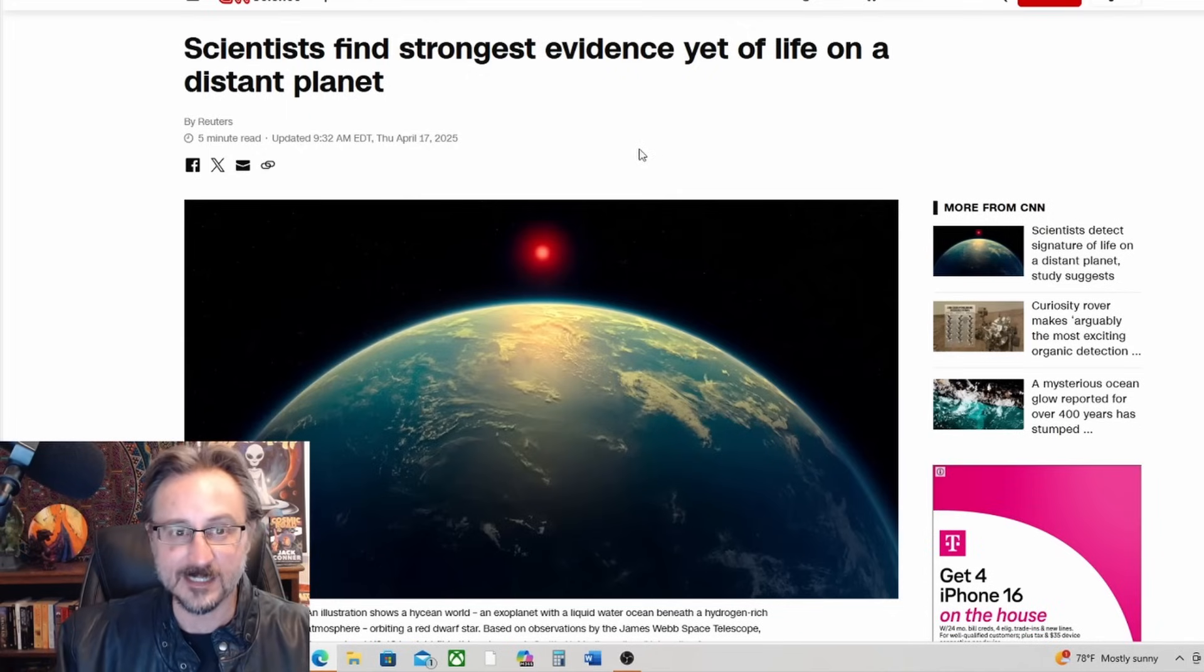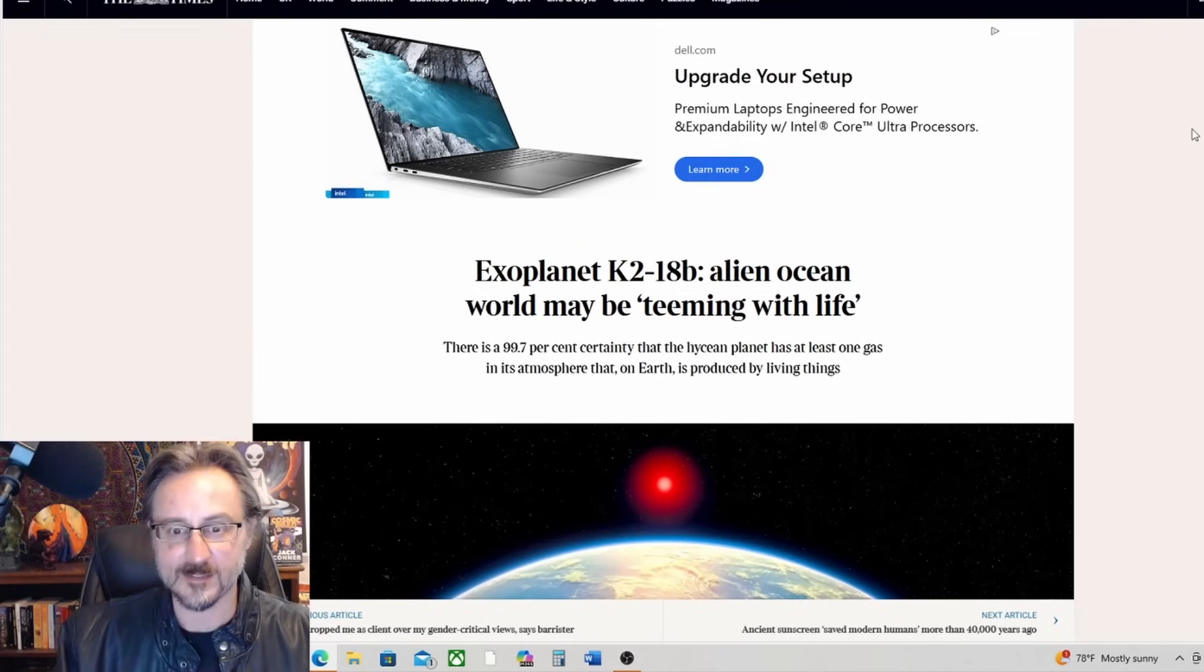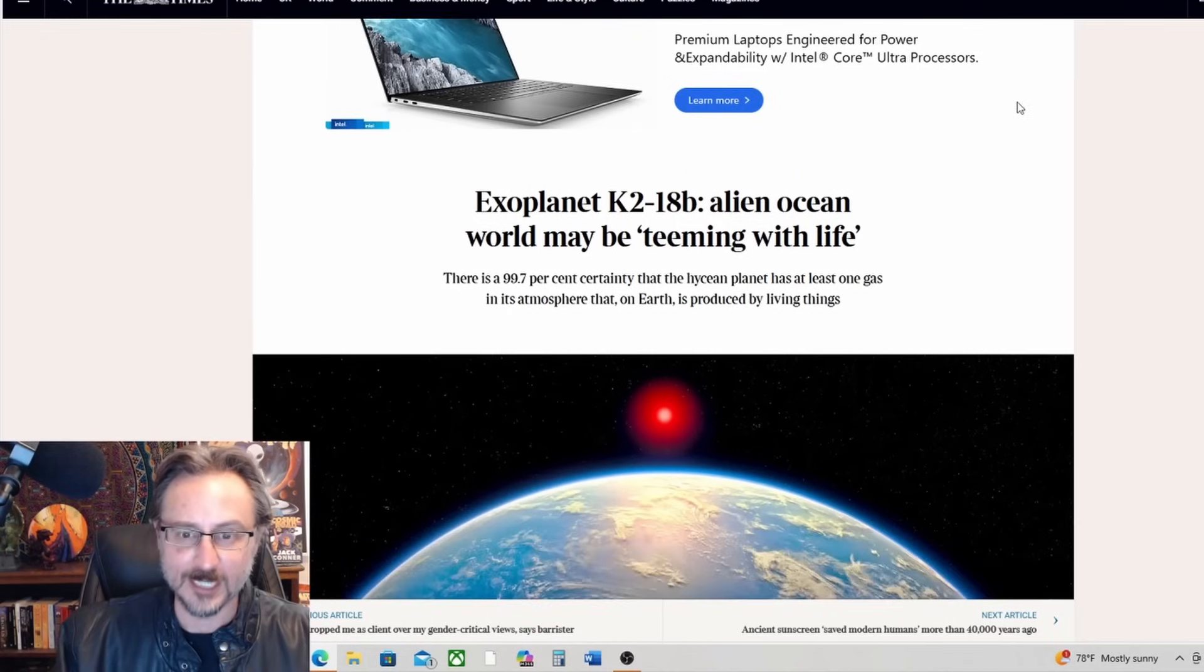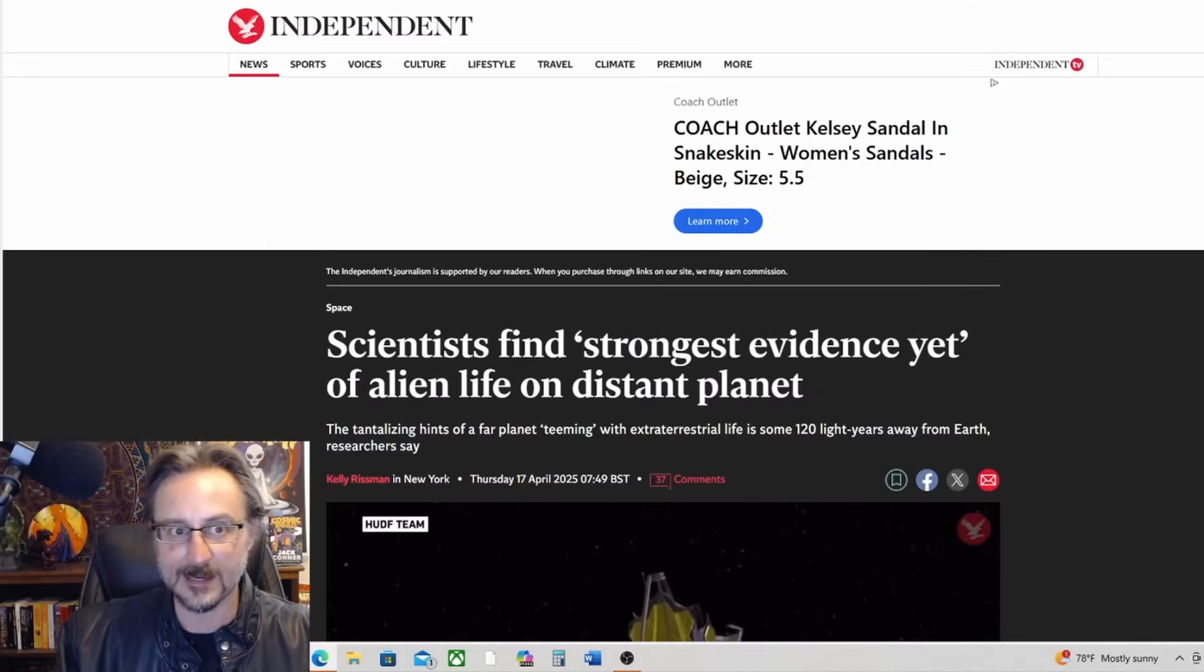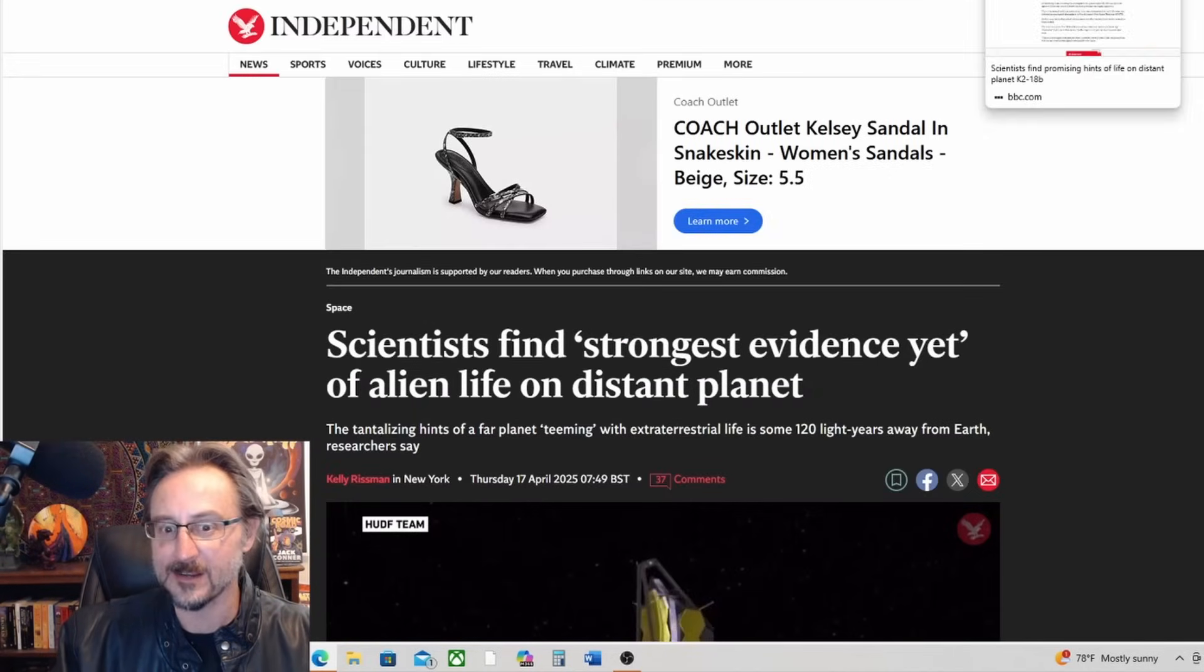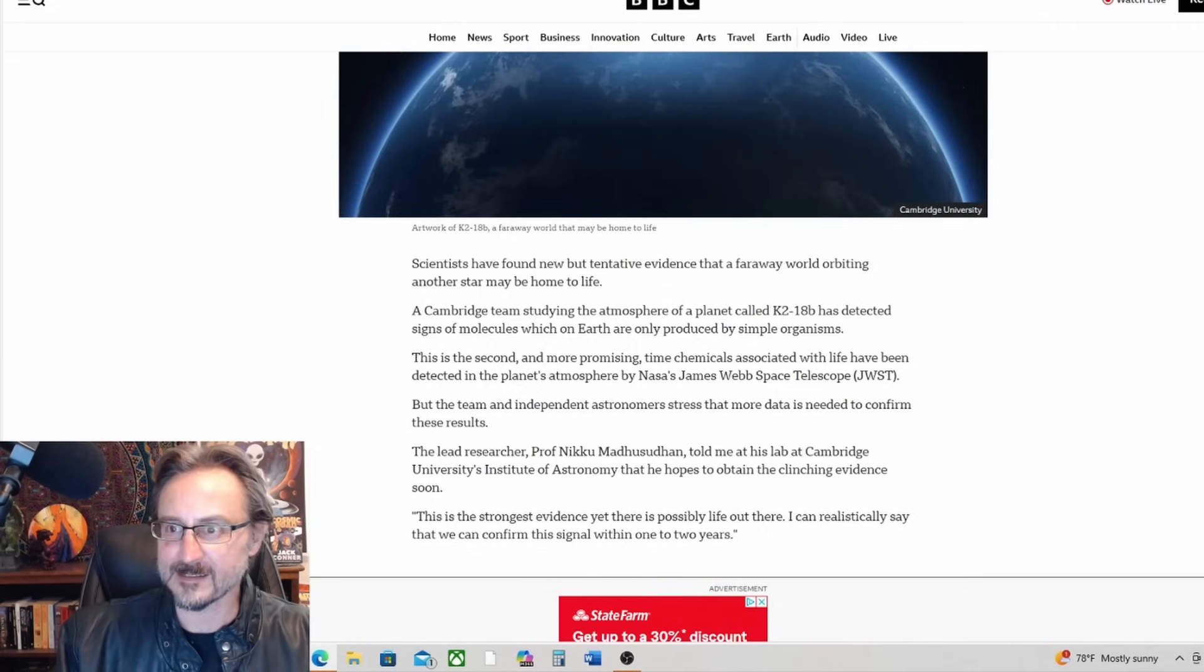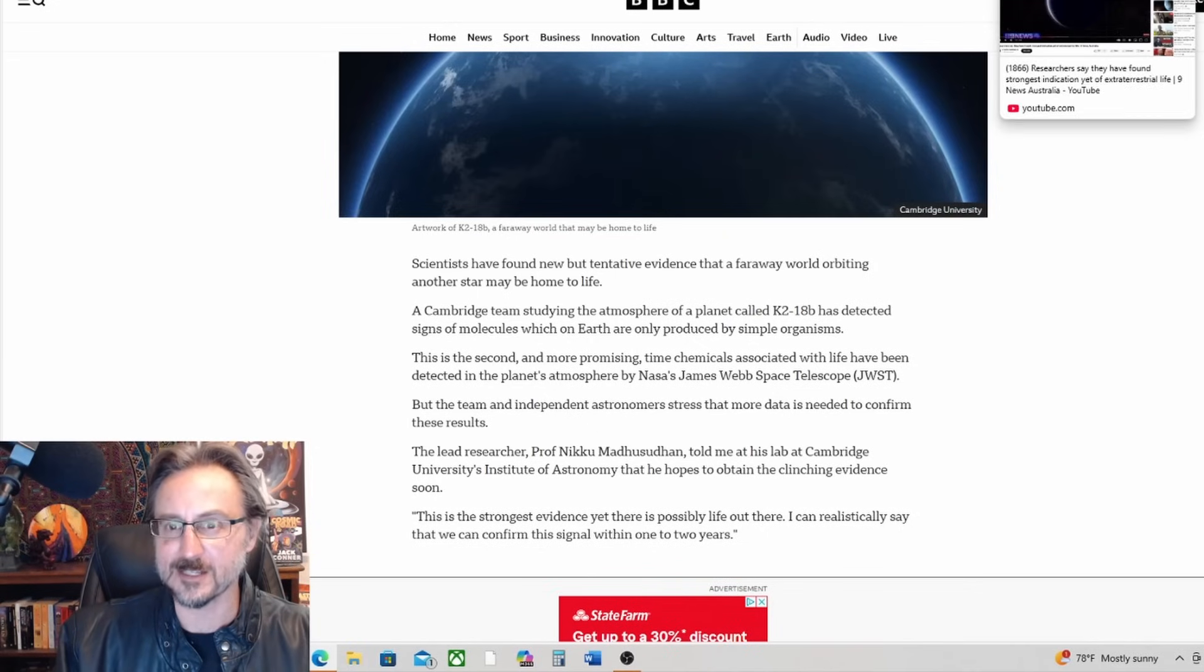Yeah, this is being reported on by CNN: 'Scientists find strongest evidence yet of life on a distant planet.' The Times is reporting on this exoplanet K2-18b, alien ocean world may be teeming with life. Here's NASA talking about it. We've got Independent.co.uk talking about it. We've got the BBC also reporting on this. Everybody's talking about it.